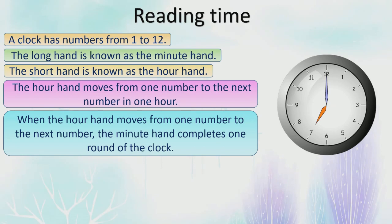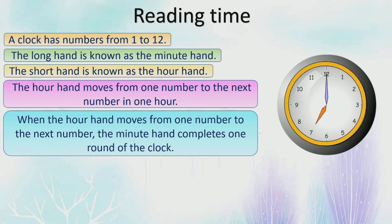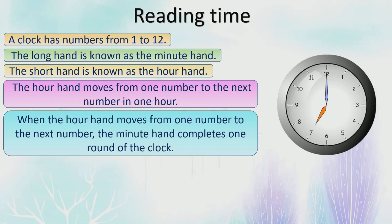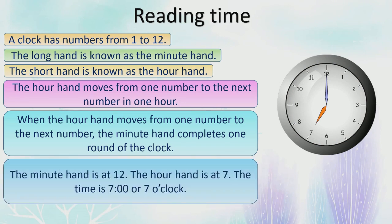When the hour hand moves from one number to another — say from 7 to 8 or 8 to 9 — the minute hand completes one full round of the clock. The minute hand, the purple one, is at 12. The hour hand, the short orange one, is at 7. So what is the time? That is 7 o'clock.